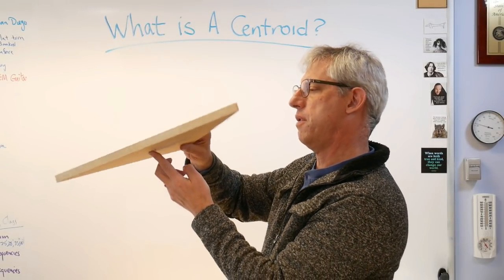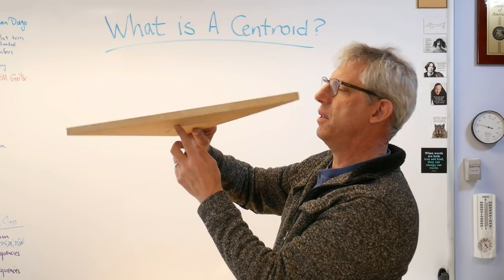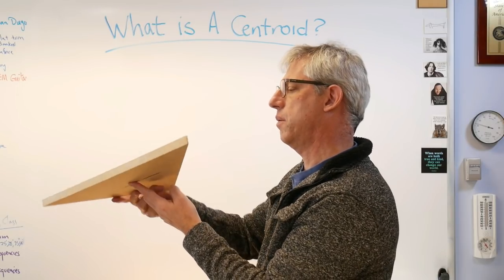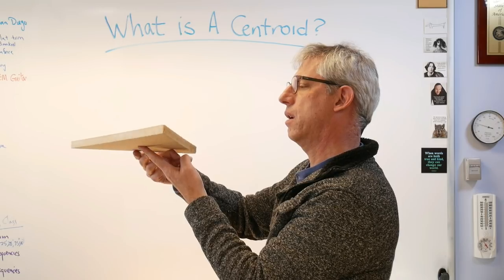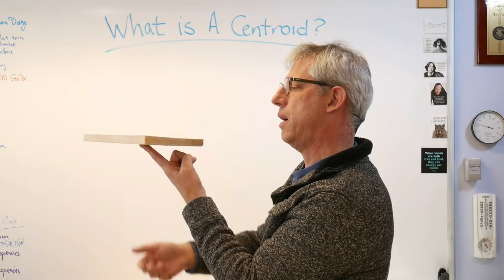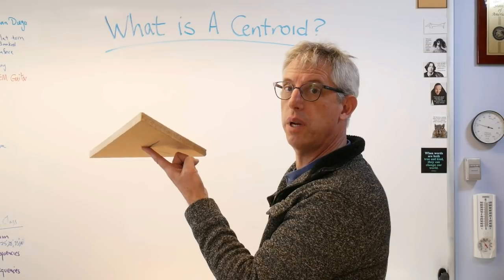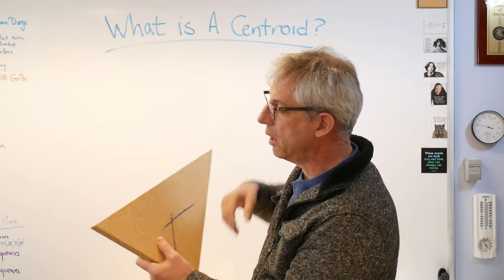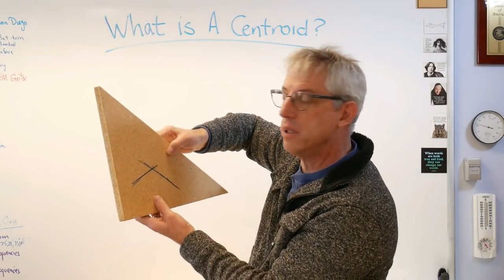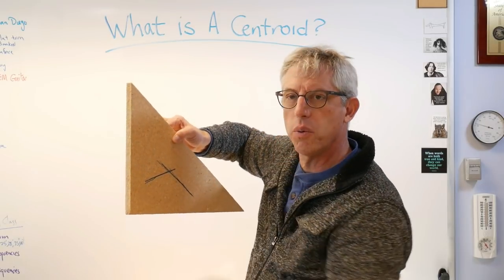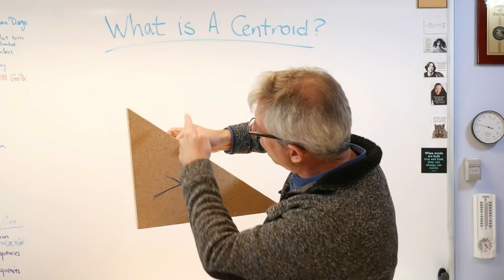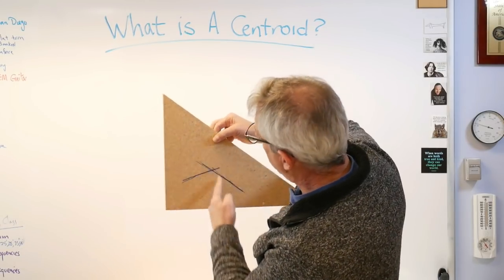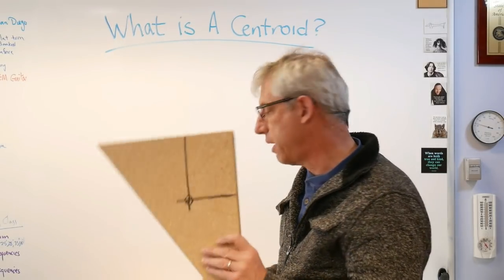I found a point and can balance it right there — pretty close. To minimize error you'd support it from a couple of different locations and find where all the lines come together. You could also use a plumb bob to get a truly vertical line rather than eyeballing it. This is how you find a centroid experimentally.